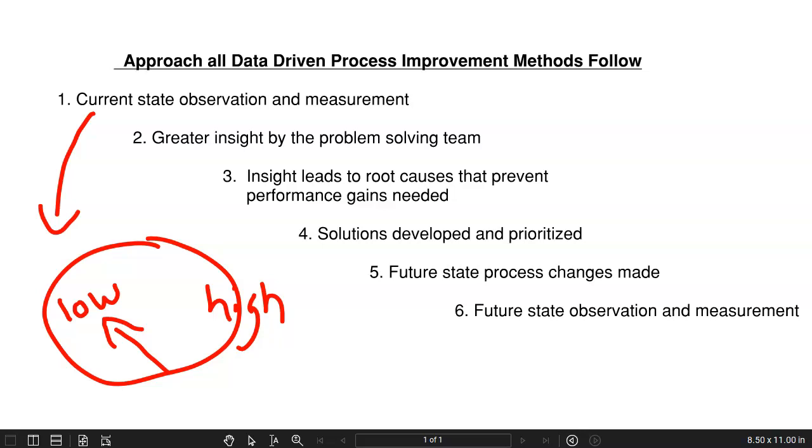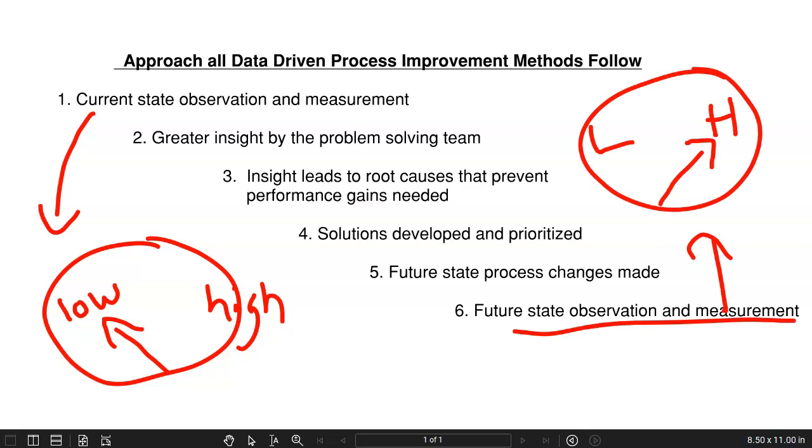After we follow the remaining steps in future state, we should see the following. Again, my apologies for the crude drawing, but performance should have moved. It should be better. I'm not saying that performance should be at the highest level, at perfection. I'm just saying that the needle needs to move in a positive direction and stay there. So it's not just about moving the needle of performance up and then seeing it backslide back down. In all process improvement methodologies, we start with a process, we make sure that we understand what the low performance is, and then we try to move to a future state in which performance is made better.